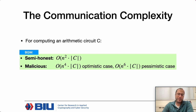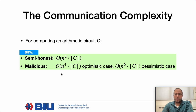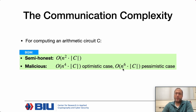In the malicious setting, the adversary can slow down the protocol but cannot break security. We have both an optimistic case and a pessimistic case. In the optimistic case, where the adversary does not slow down the protocol, the communication complexity is n-to-the-four times the circuit size. In the pessimistic case, it is n-to-the-six times the circuit size.